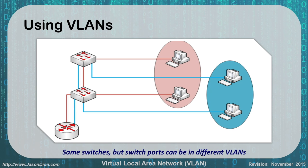With VLANs, I can use a single switch on a floor and serve two different networks. In this case, I have the red and blue PCs from upstairs on one switch and the red and blue PCs from downstairs on another switch, but I can keep their traffic separate as designated by these red and blue lines. They go back to the router to be serviced, but between themselves they are in their own separate broadcast domains.